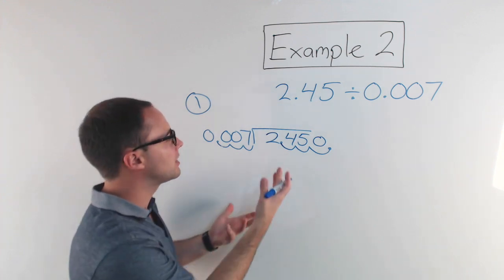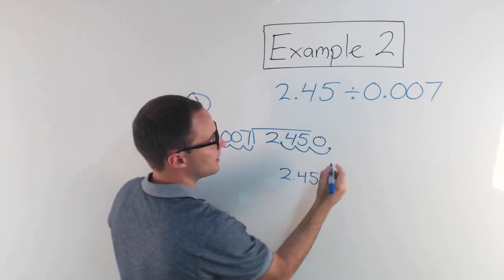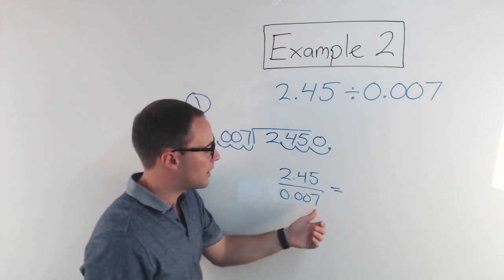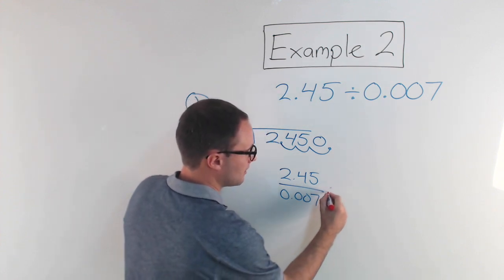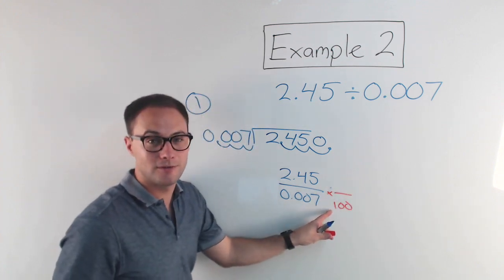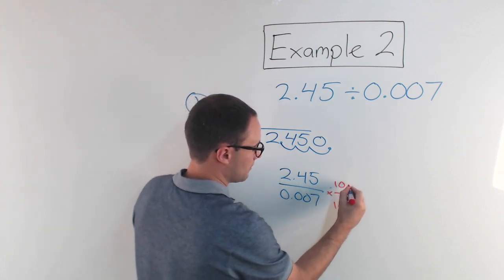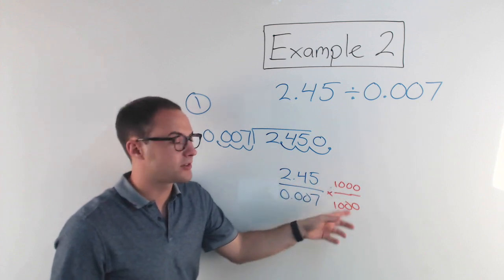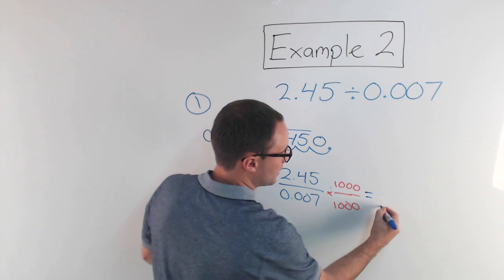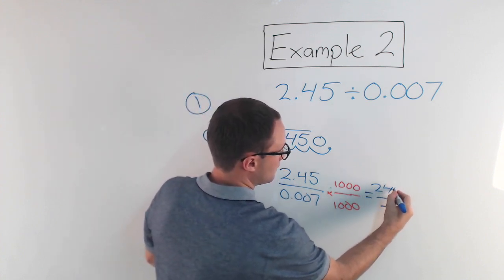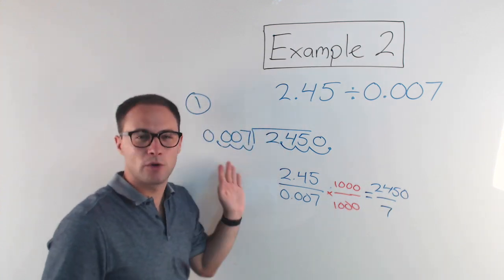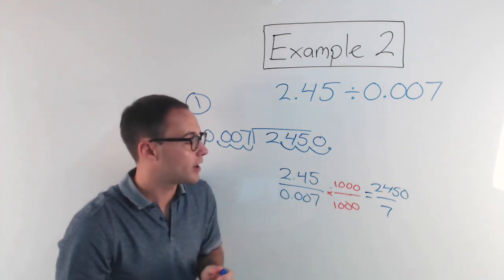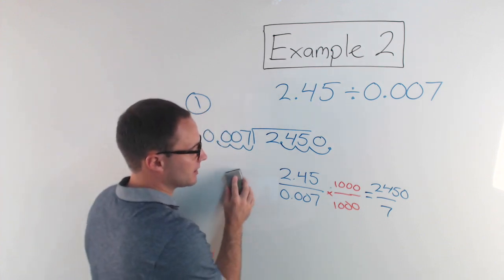This is basically just like equivalent fractions. You can think of it as: 2.45 divided by 0.007 — if I want to make my denominator a whole number, I would multiply by 1,000 over 1,000. Anything I do to the denominator I need to do to the numerator. Multiplying by 1,000 over 1,000 means I'm essentially just multiplying by 1 — nothing is actually changing. That would become 2,450 divided by 7. So we're not changing the problem; the quotient will still be the same. It just makes it much easier for us.